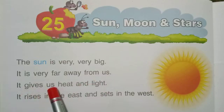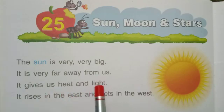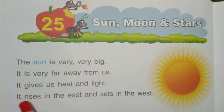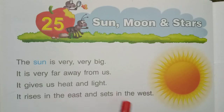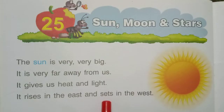It gives us heat and light. यह हमें heat देता है and light देता है. गर्मी देता है और light देता है. It rises in the east and sets in the west. यह east में उगता है और west में डूबता है.